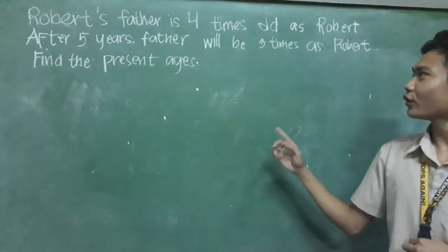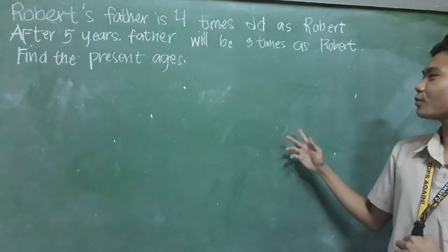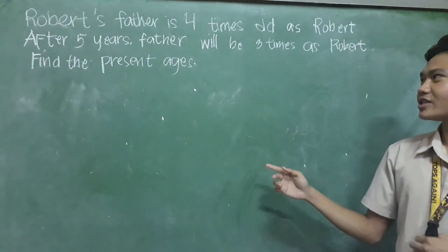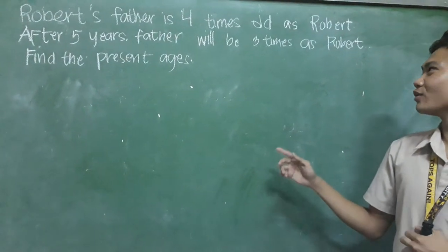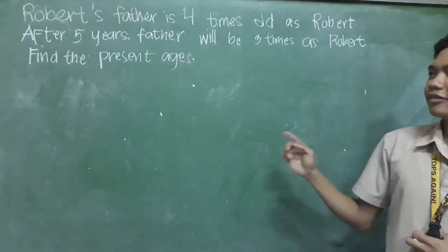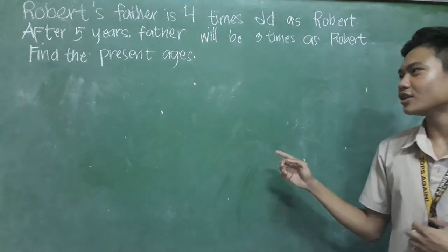Robert's father is four times as old as Robert. After five years, the father will be three times as old as Robert. Find the present ages.